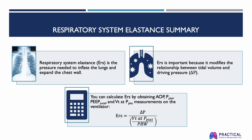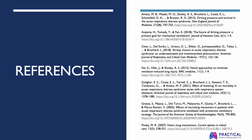In summary, respiratory system elastance, also abbreviated as ERS, is the pressure needed to inflate the lungs and expand the chest wall. ERS is important because it modifies the relationship between tidal volume and driving pressure. You can calculate ERS by obtaining plateau pressure, total PEEP, and tidal volume at plateau pressure measurements on the ventilator and inputting the values into the equation: ERS equals delta P divided by tidal volume at plateau pressure divided by the predicted body weight. Thank you for your attention. I hope you enjoyed this presentation.